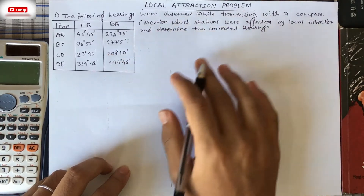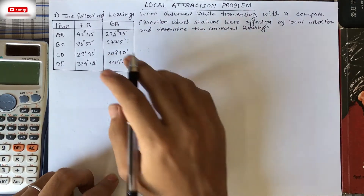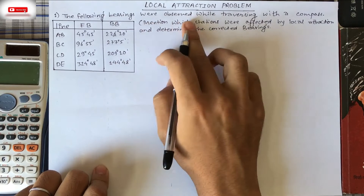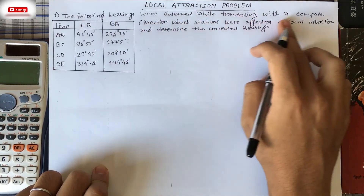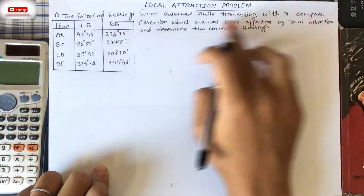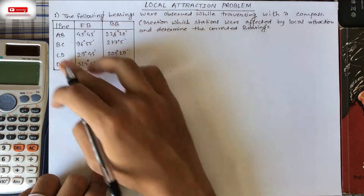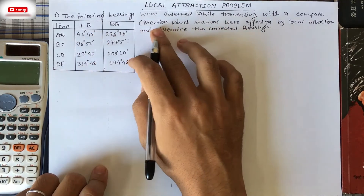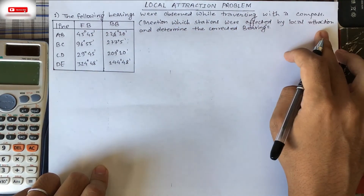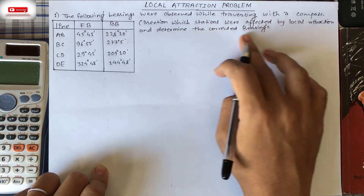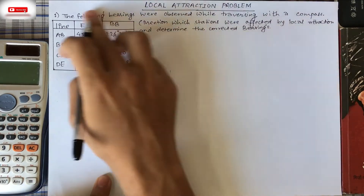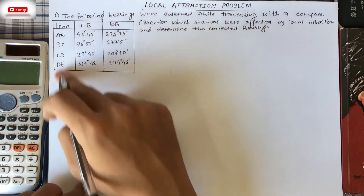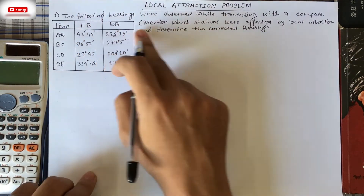Friends, let's read the question first. The following bearings were observed while traversing with a compass. These are the bearings given. We need to mention which stations were affected by local attraction and determine the corrected bearing. These are the given lines with their fore bearing and back bearing.